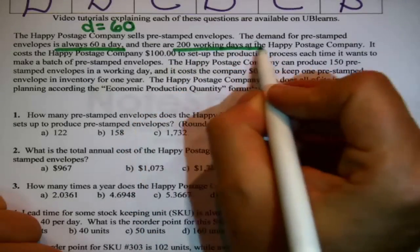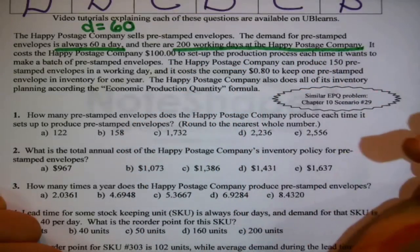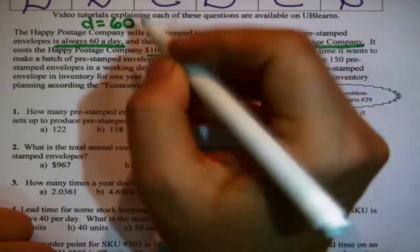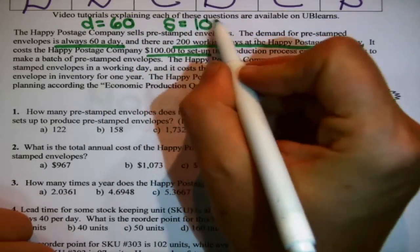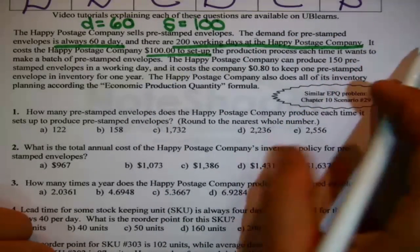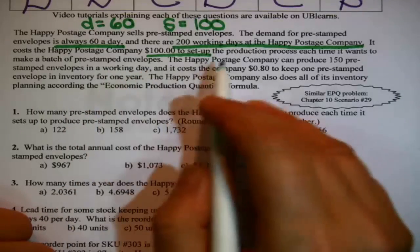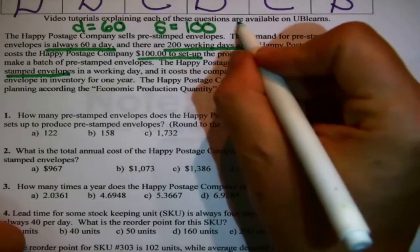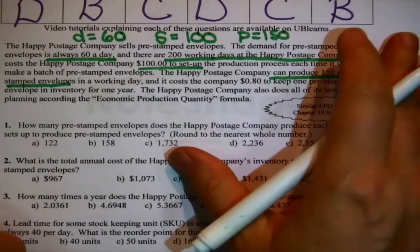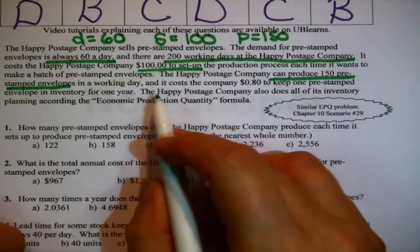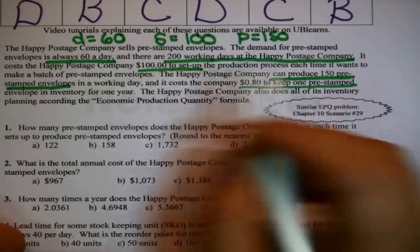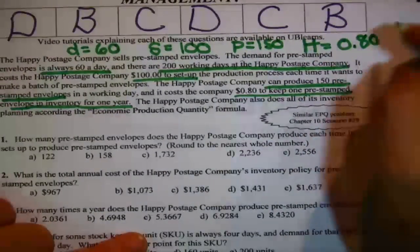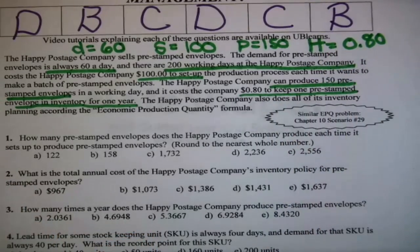Lowercase d is daily demand, and there's always 200 working days in their year. It costs Happy Postage Company $100 to set up production. That's that capital S, the fixed cost of an order, each time it wants to make a batch of pre-stamped envelopes. Happy Postage Company can produce 150 pre-stamped envelopes in a working day. That's lowercase p. And it costs the company 80 cents to keep one pre-stamped envelope in inventory for one year. That is capital H, the cost of holding one unit in inventory for one year.